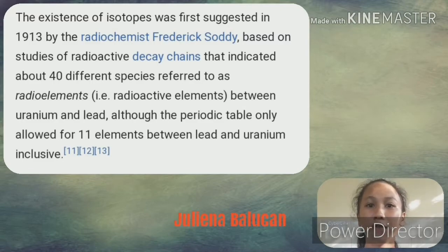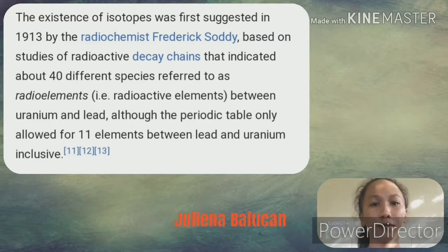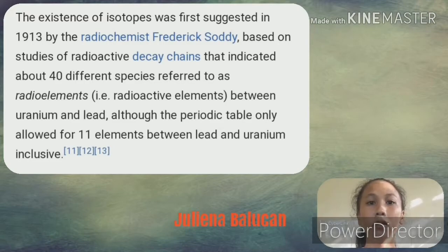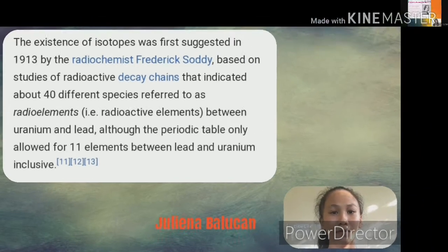Based on studies of radioactive decay trends that indicated about 40 different species referred to as radioelements between uranium and lead. Although the periodic table only allowed for 11 places between lead and uranium.